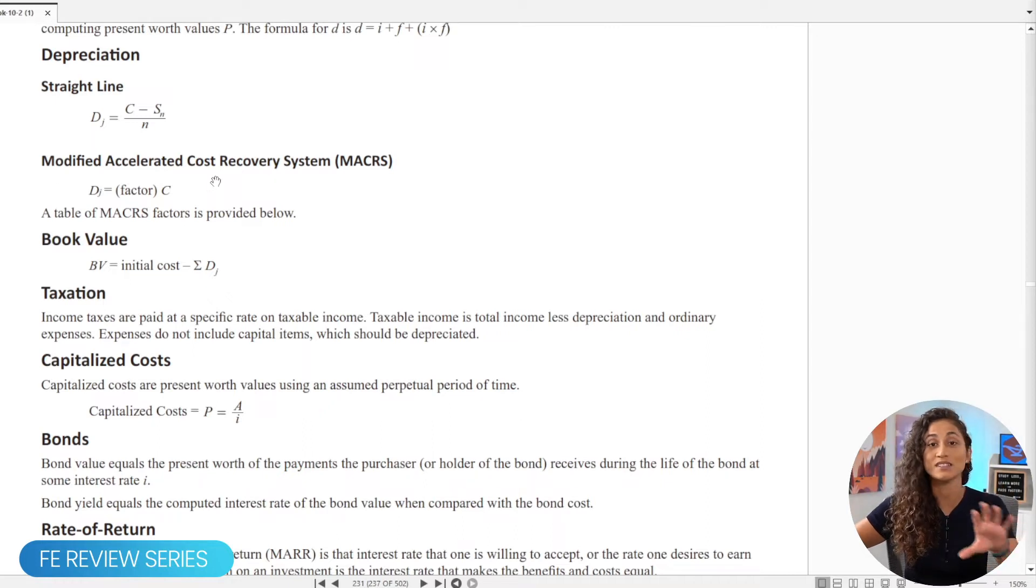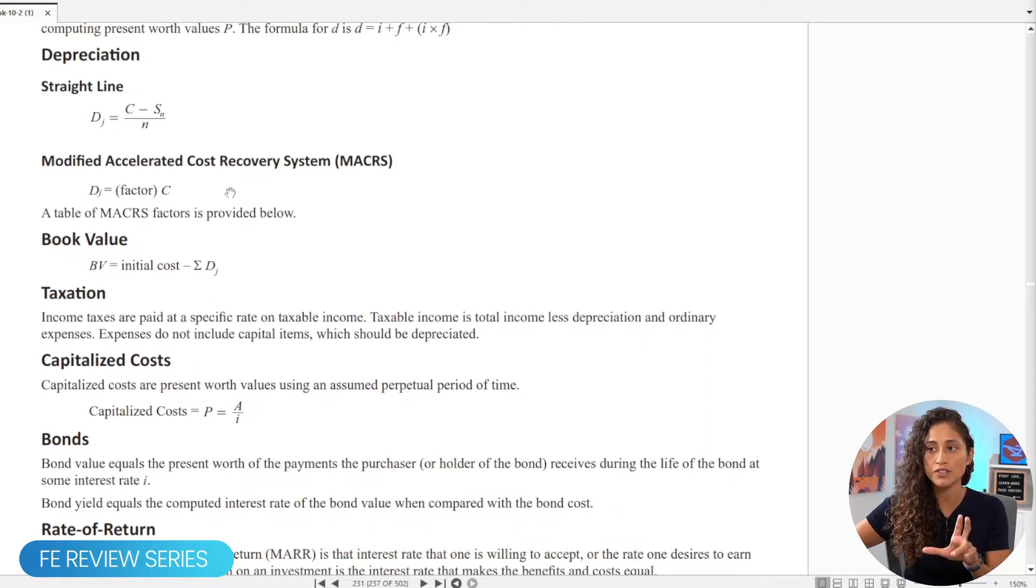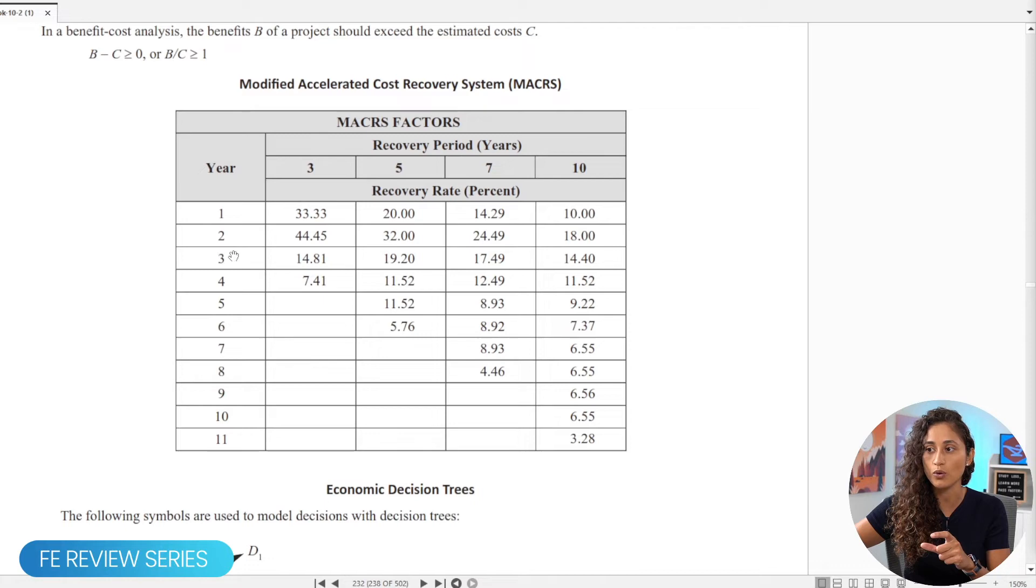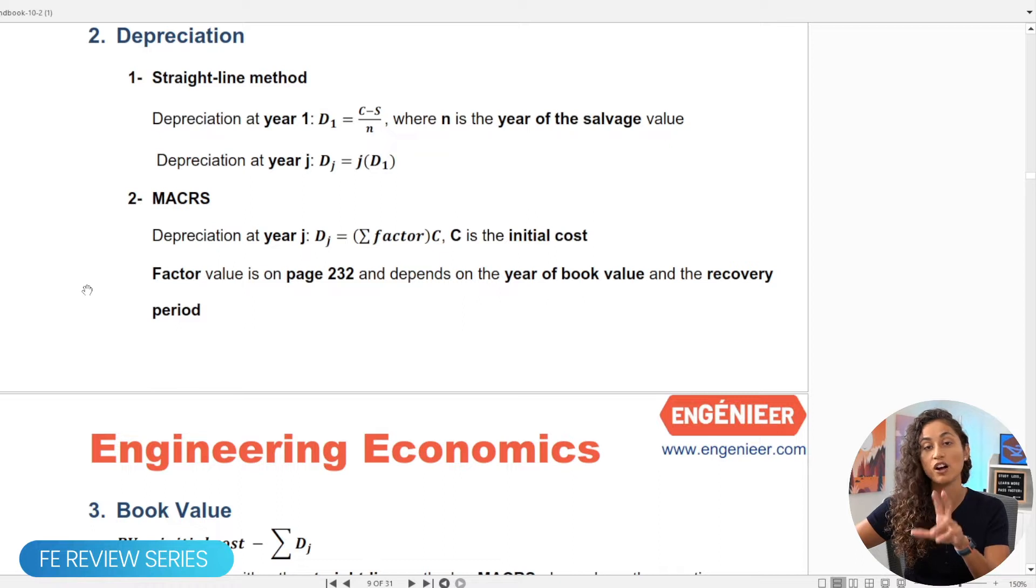And if you guys want to see the same problem, but instead of using MACRS, we use the straight line method, go ahead and comment below straight line method. So let's go over this equation here. To find D is going to be equal to the factor times C. C is the initial cost. And in the factor, we're going to actually use the table here. When we're using this table, this is where you've got to be careful. And this is where we're going to go to the cheat sheet that we created. And then here I actually cover the steps on how to find the factor.